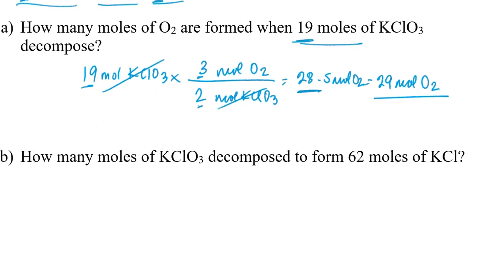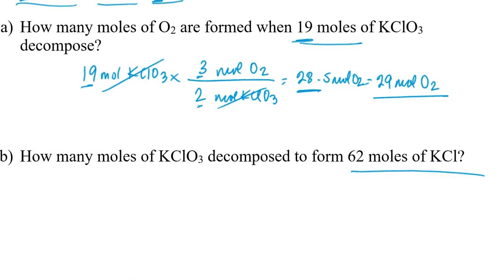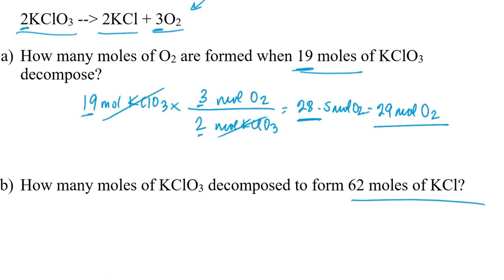And our final example here. They're asking how many moles of potassium chlorate decomposed if I formed 62 moles of potassium chloride. So once again, I'll start with the given information, 62 moles of potassium chloride. And I'm going to convert from moles of potassium chloride to moles of potassium chlorate. If I consult the balanced chemical equation, for every two moles of potassium chloride, then two moles of potassium chlorate were involved in forming.